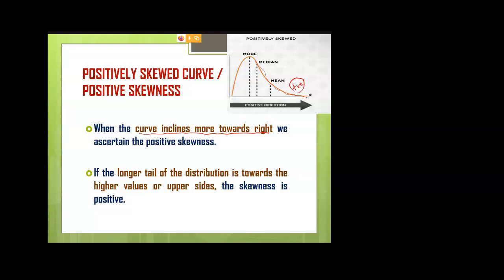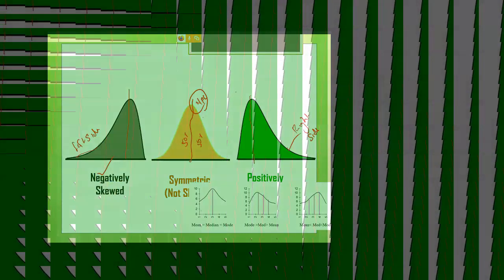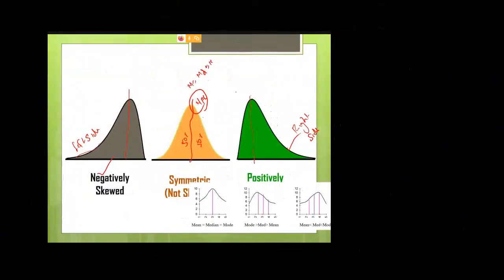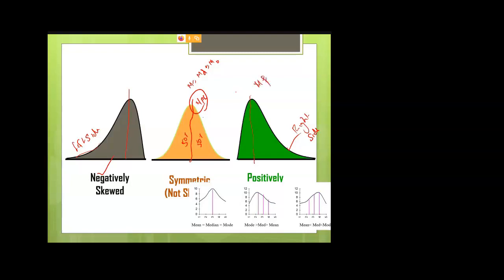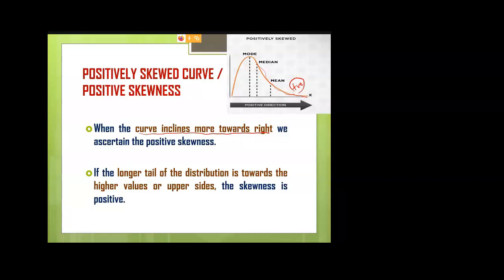In the normal probability curve, mean equals median equals mode. But in the skewness case, mean is not equal to median, not equal to mode. When the three values are not the same, we conclude that the distribution is skewed. We must then check whether the distribution is positively skewed or negatively skewed based on the differences between mean, median, and mode.